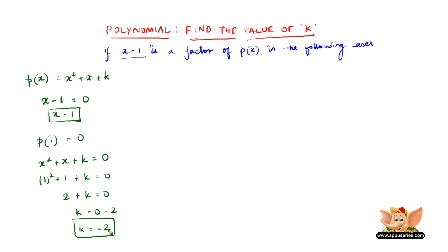Let me quickly summarize the whole problem. If x minus 1 is a factor of p of x, which is x squared plus x plus k, then p of the zero of x minus 1 should be equal to 0. So we equate this equation to 0 and substitute the zero of x minus 1, which is 1, to find the value of k.